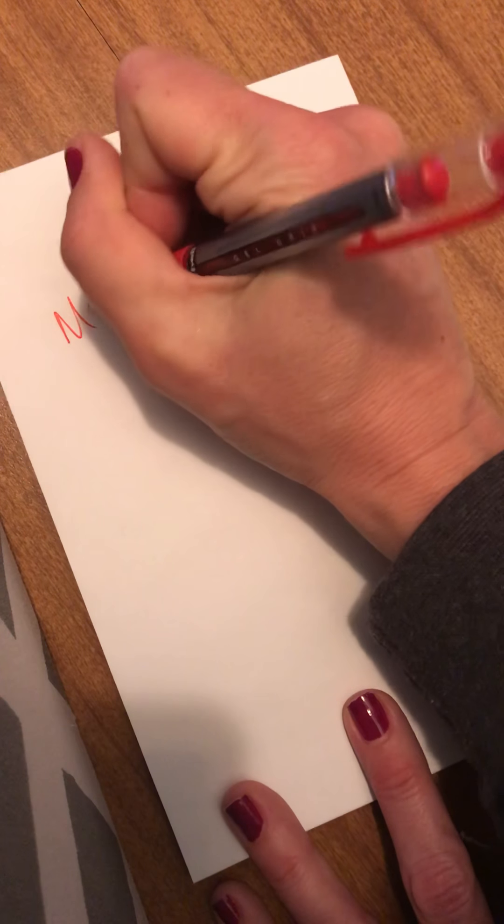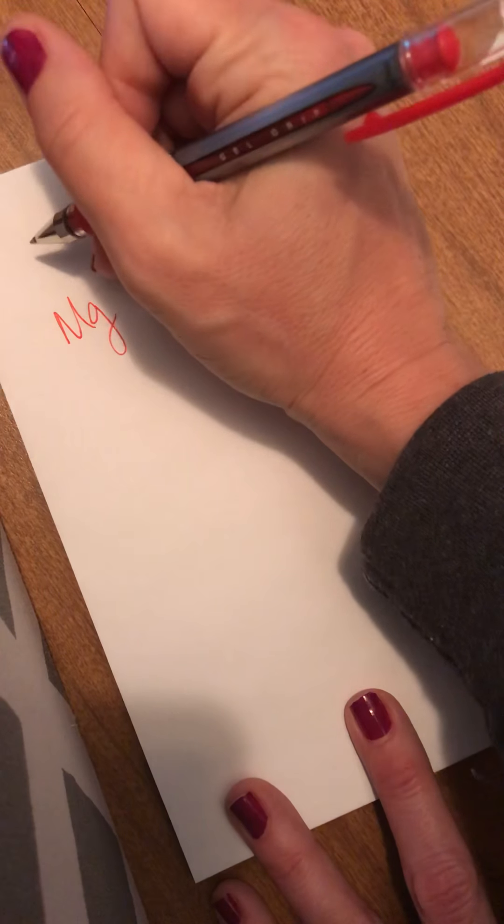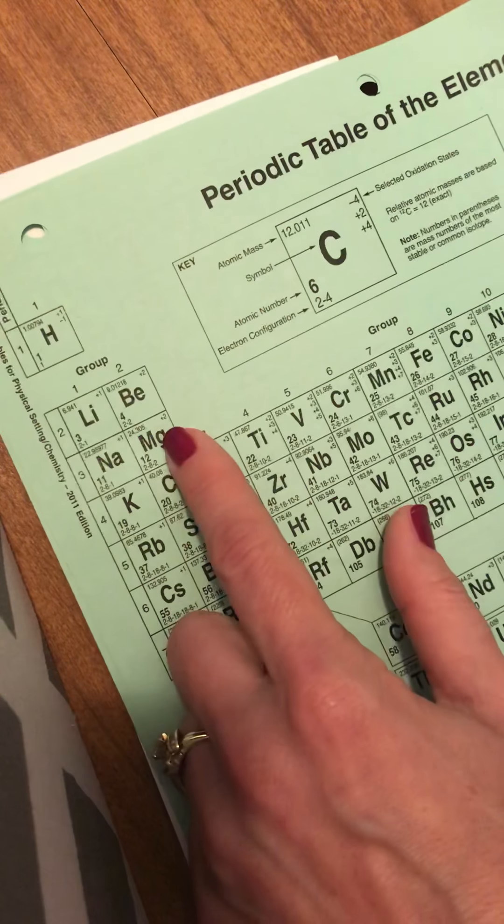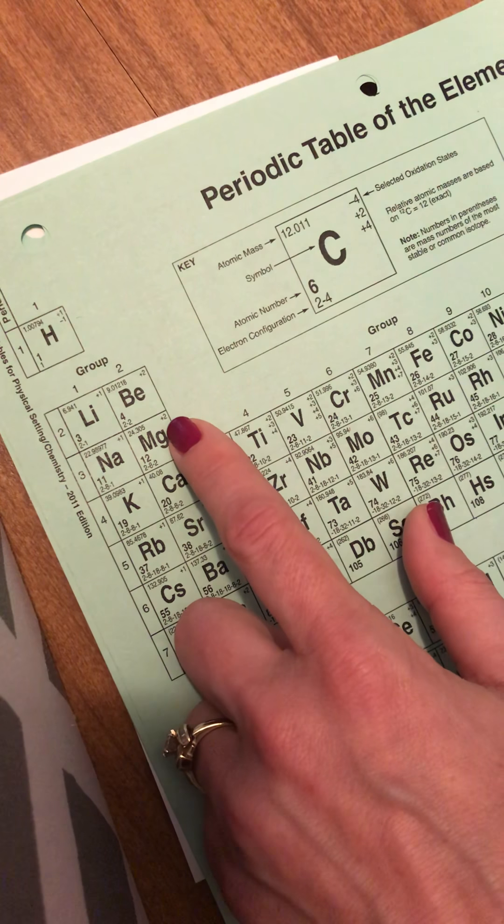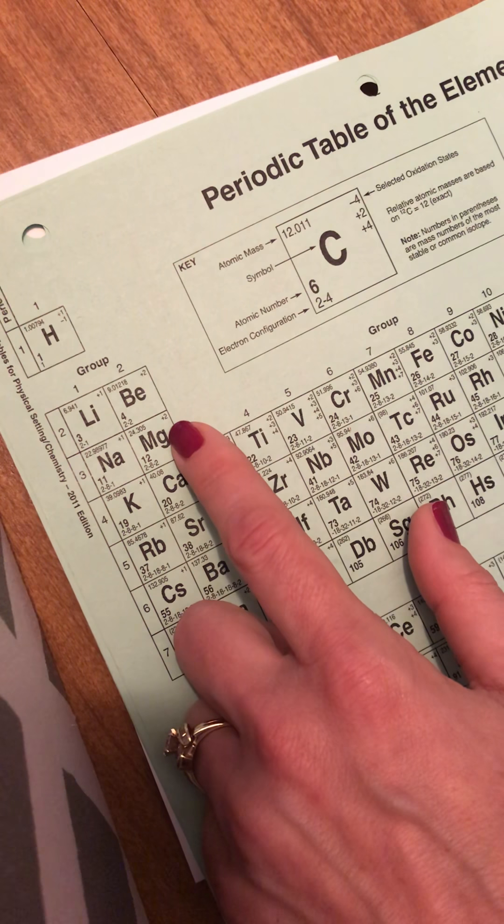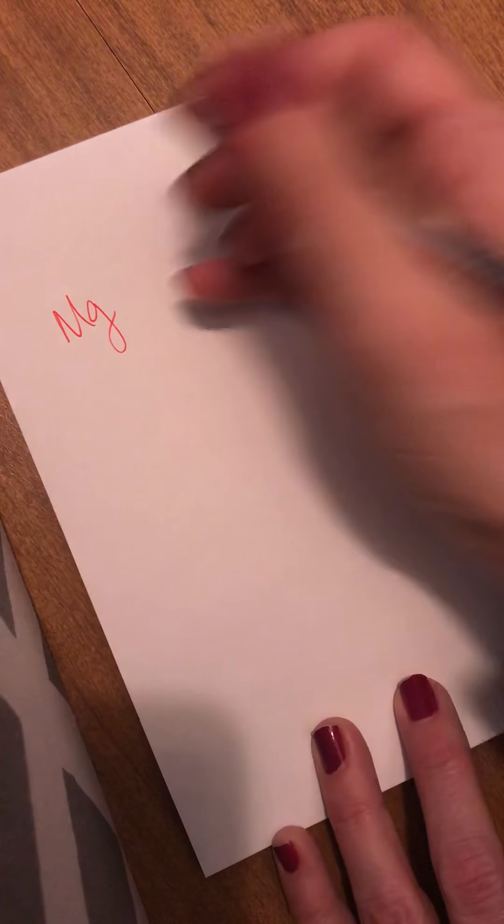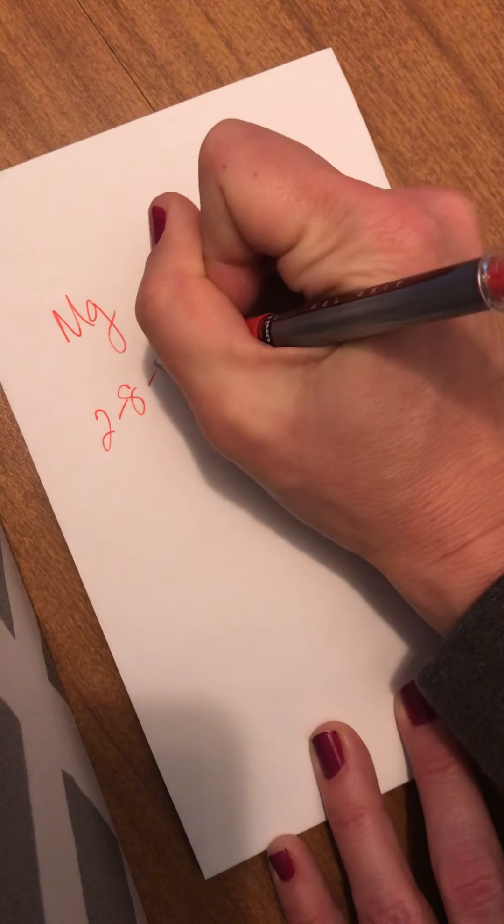A little bit more on atoms and ions. I'm going to go back to my magnesium. And my magnesium, if I look up here in the top right corner, I see that the most common oxidation state is a plus 2. Which makes a lot of sense, because we said that this was 2, 8, 2, so it has 2 valence electrons.